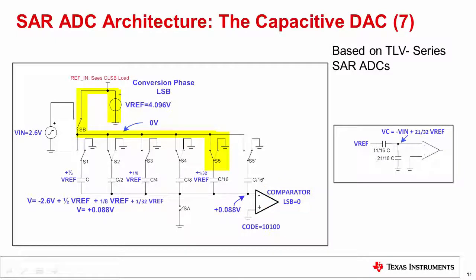At the last step, the least significant bit, or LSB, fifth bit decision is made by switching in C/16 using switch S5 as shown in the circuit. The resulting 5-bit conversion result is 1, 0, 1, 0, 0.